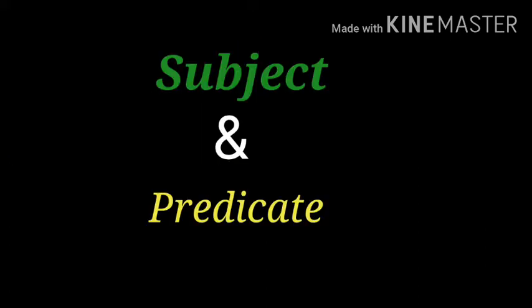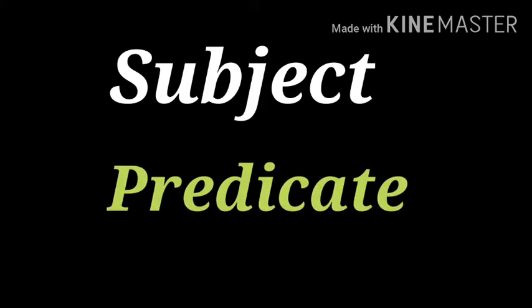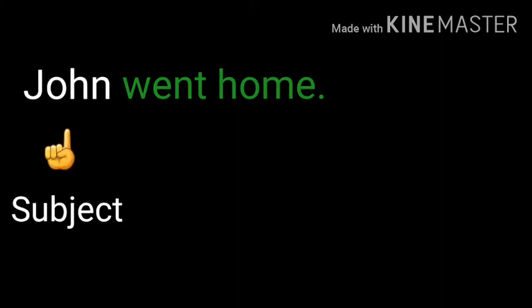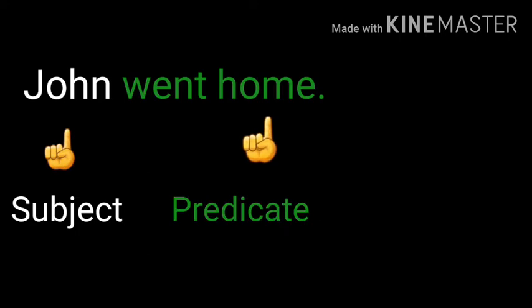What do you mean by subject and predicate? The subject of the sentence is what or whom the sentence is about. A predicate is the part of a sentence or clause containing a verb and stating something about the subject. For example, John went home. Here, John is the subject or the doer of the action. Went home is the predicate.